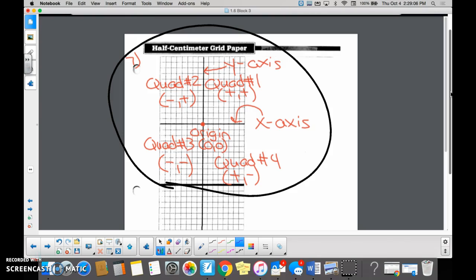Up here. So if you start at the origin and you go this way and this way, this is a positive direction, right? Yes. And up is positive. So quadrant one is always going to have a positive and a positive.